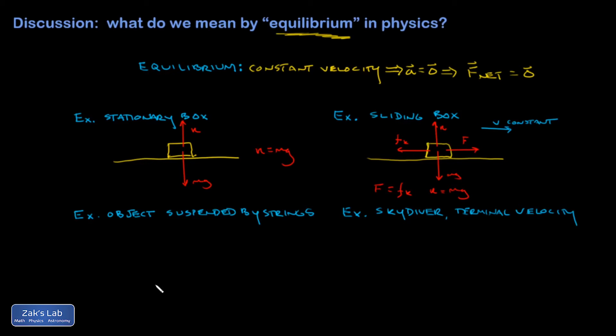Another typical example we see is an object suspended by strings, and then you have to work out some trigonometry to figure out the tension in the strings. Here's another typical equilibrium problem. Again, that's the case where the constant velocity is zero. Everything is just stationary, so all the forces have to be balanced.